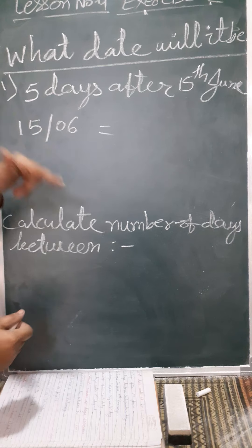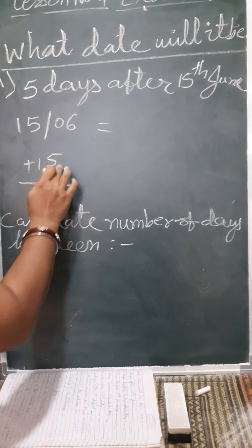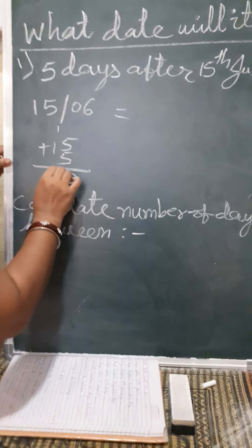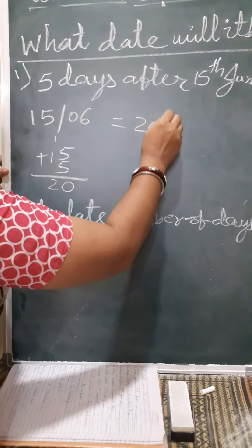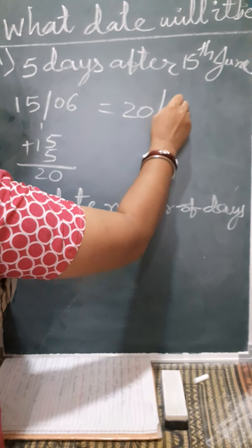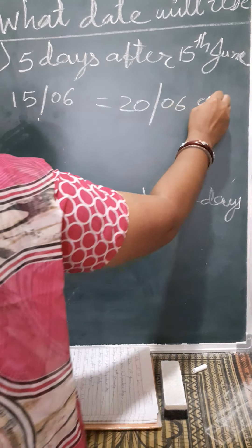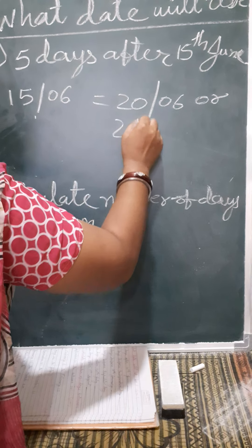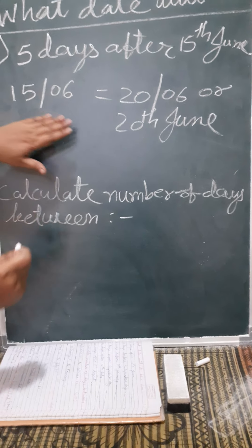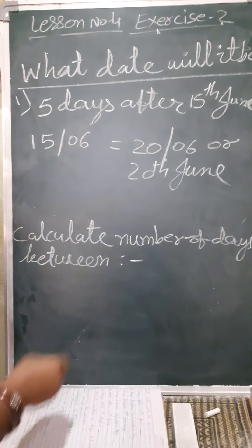We write 15, then we add: 15 plus 5. That gives us 20th — same June only. You can write it as 20th June. Now understood how we will write — we can write this way also or this way also, same.